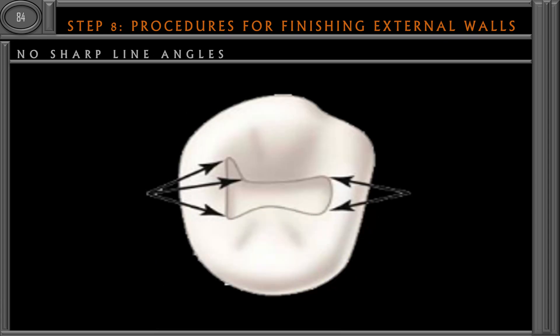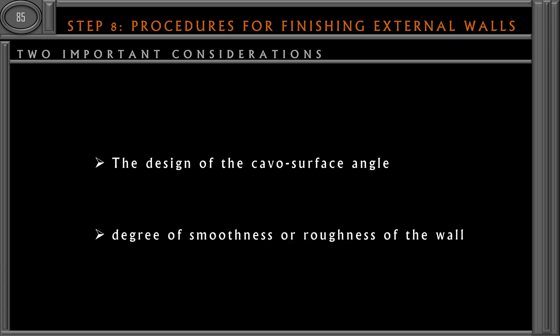Whenever a tooth preparation has sharp margins, keep in mind that sharp line angles may result in unsupported enamel or act as points of stress concentration, which can propagate a crack. Therefore, sharp line angles should also be removed while finishing the external walls.